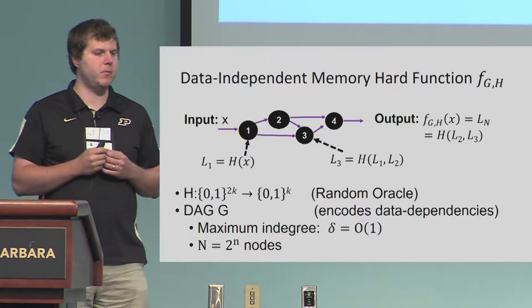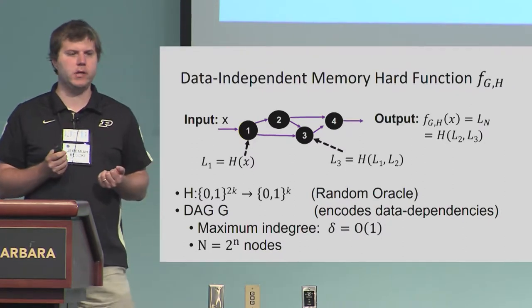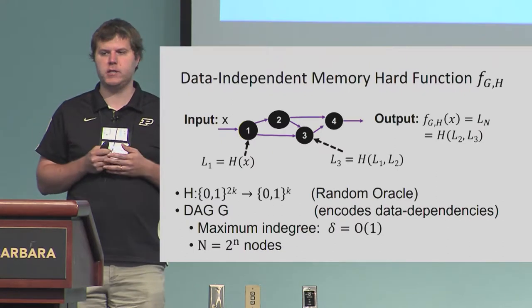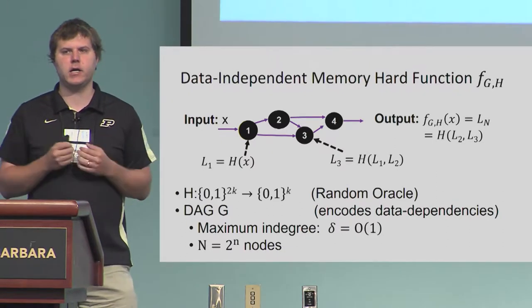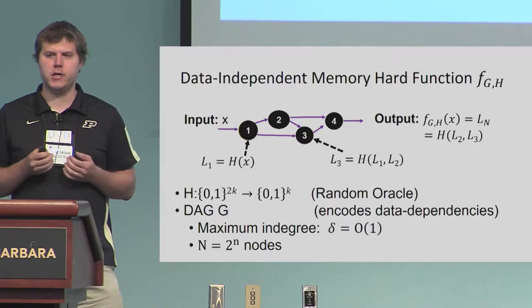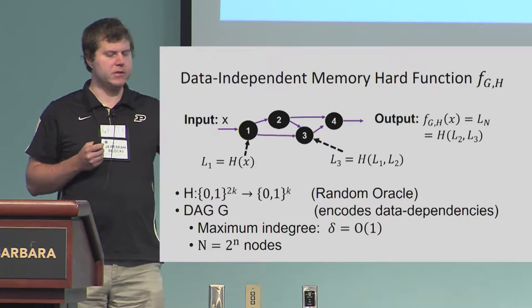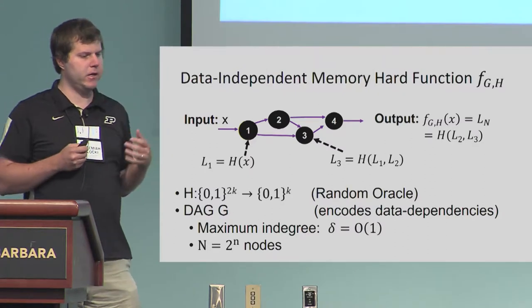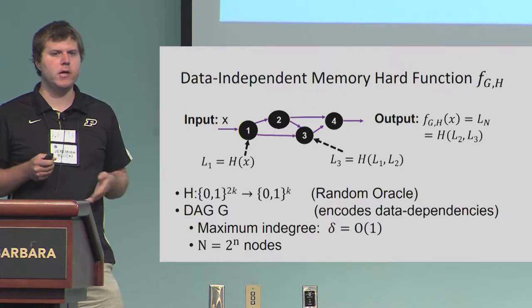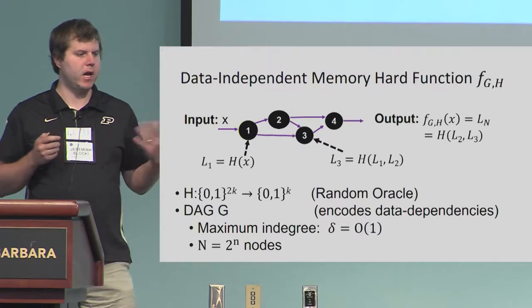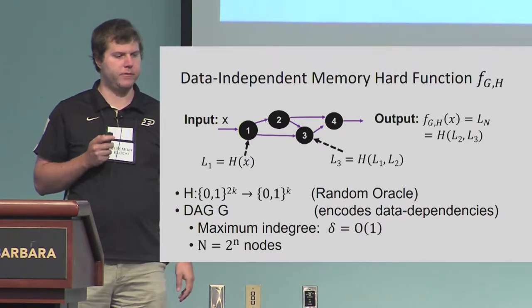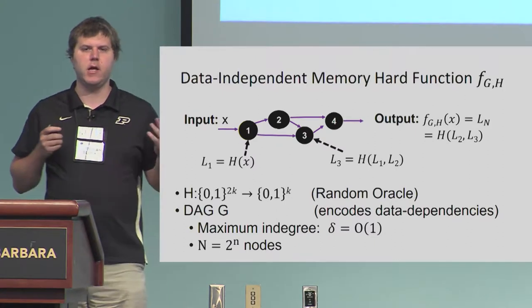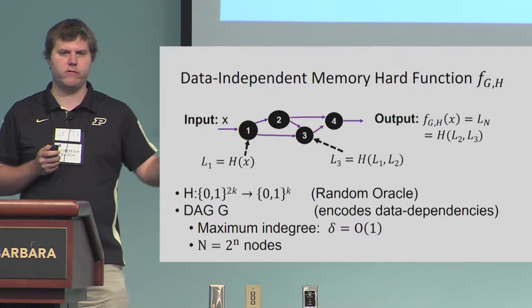To specify a data-independent memory-hard function, we need to do two things: specify a directed acyclic graph G and a labeling function H. Typically, H we think of as being a random oracle, though it's also okay for H to be an ideal permutation or an ideal cipher. In this talk we'll focus on random oracles. Intuitively, the DAG encodes data dependencies — the label of an internal node is the hash of the labels of its parents. The output of the function is the label of the last node in the graph. We'll use big N to denote the total number of nodes, and typically assume N is a power of two, using little n for that power.